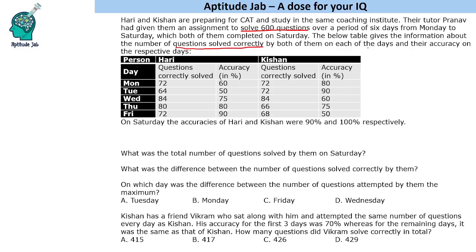We are given data till Friday — their accuracy and the questions correctly solved. What we are not given is the number of attempts. So basically, we have to calculate the number of attempts. Correct questions equals attempts multiplied by accuracy. We are given correct attempts and accuracy, so attempts can be calculated from this formula.